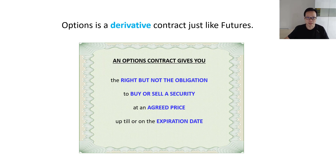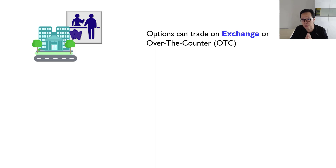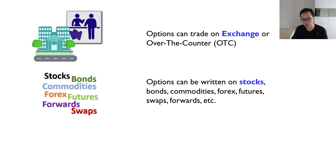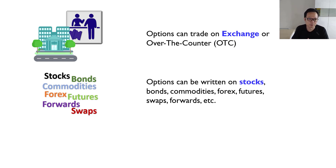You can trade standardized option contracts on the exchanges, and options can also be traded over the counter where contracts can be customized to suit the needs of the different counterparties involved. All options are contracts written on another underlying asset, and this asset can span a wide range — it can be a stock, a bond, commodities, forex, or even futures, forwards, and swaps. For this video, I'm going to concentrate on options on stocks.